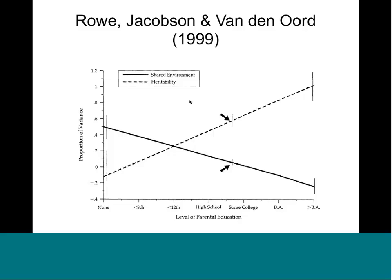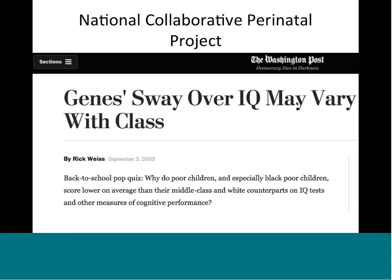In 1999, in the Add Health study, David Rowe and Kristen Jacobsen published a study looking at the heritability of intelligence test scores — from the Peabody Picture Vocabulary Test — as a function of parental education. They showed that as parent education went up on the x-axis, the heritability of IQ went up as well.